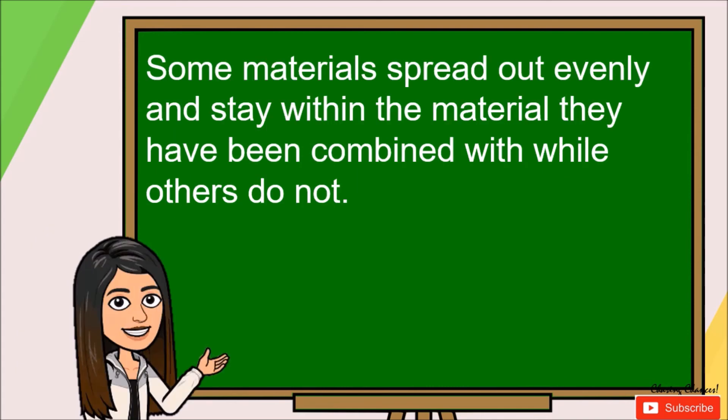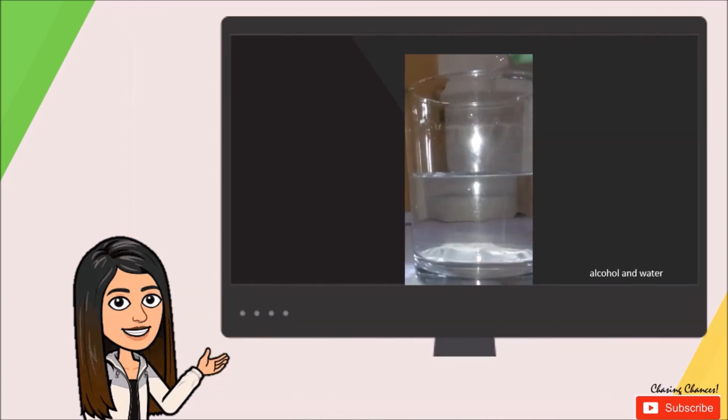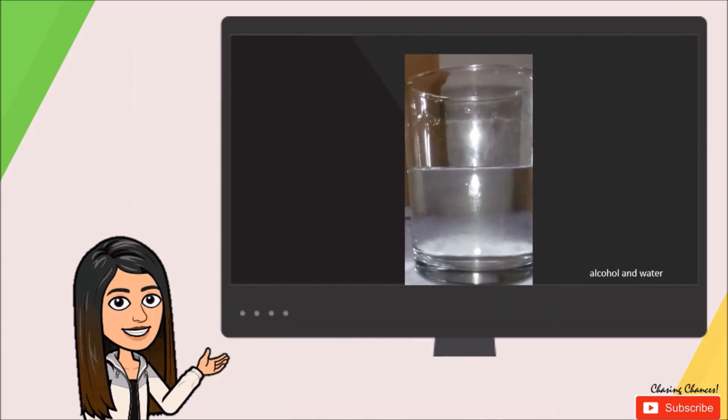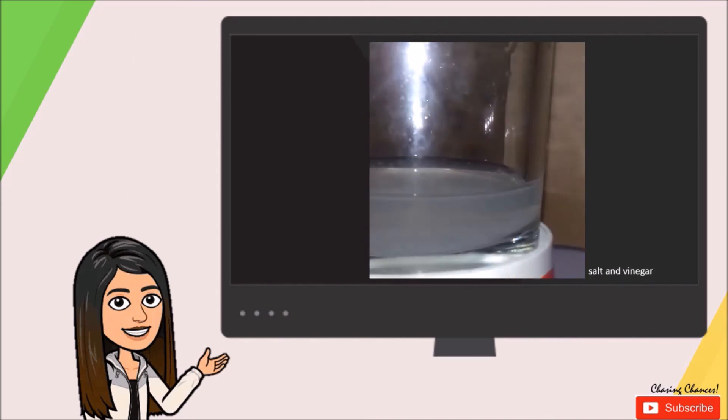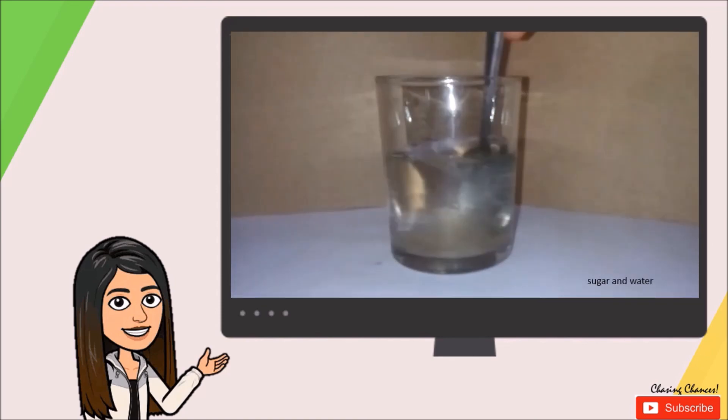Some materials spread out evenly and stay within the material they have been combined with while others do not. Some materials will dissolve in a liquid while some do not. Some settle at the bottom of the container or create a layer on top instead. Some solid materials spread evenly in liquid and some spread slowly. Some do not spread at all. Some need stirring to be completely mixed.